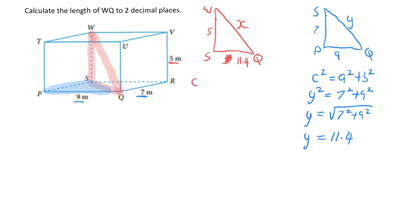Starting off with the formula, C squared equals A squared plus B squared. Then I've got my substitution. So X squared is going to equal 5 squared plus 11.4 squared. So X will equal the square root of 5 squared plus 11.4 squared. So X will equal 12.45 metres.